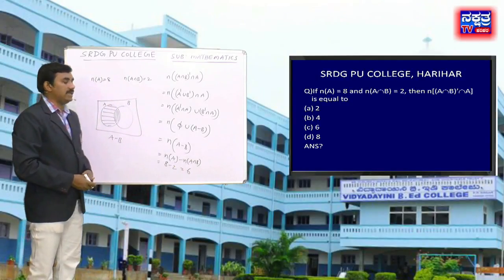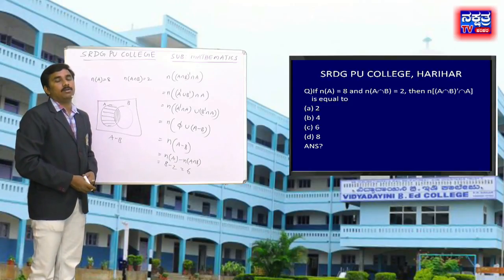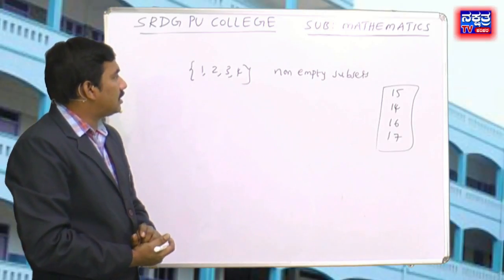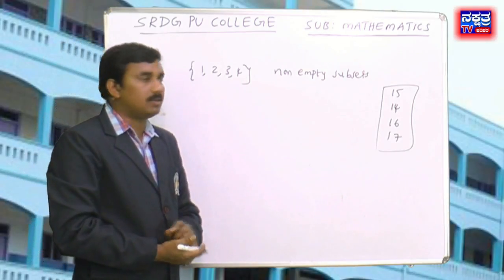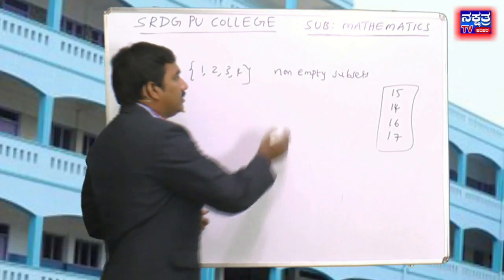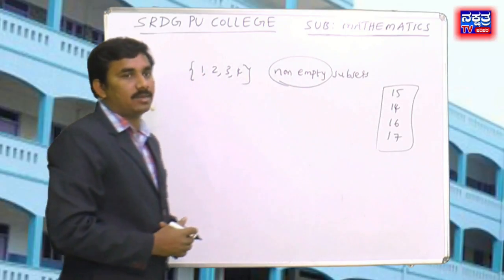The next question: the number of non-empty subsets of the set {1, 2, 3, 4} is: option A: 15, option B: 14, option C: 16, option D: 17. The given set is {1, 2, 3, 4}. The key word here is 'non-empty subsets'.